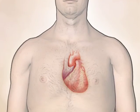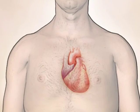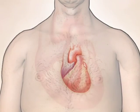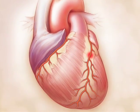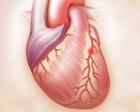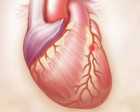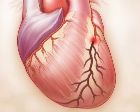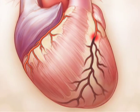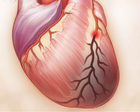Coronary artery occlusion results in reduced perfusion to the myocardium. Thrombosis within the coronary artery occludes blood flow downstream and could lead to an acute myocardial infarction.